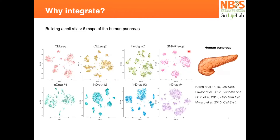A very clear example in the literature is the integration of different methodologies. Here you have CellSeq, CellSeq2, Fluidigm, SmartSeq2, InDrop 1, 2, 3, and 4 — this is a pancreas data set. You can see how many cells you have and around seven general cell types.